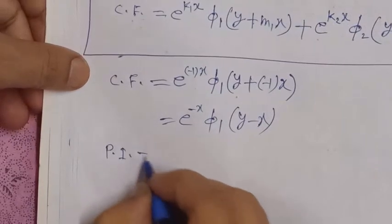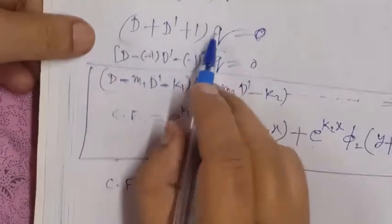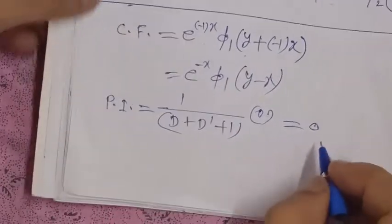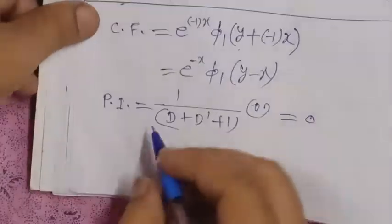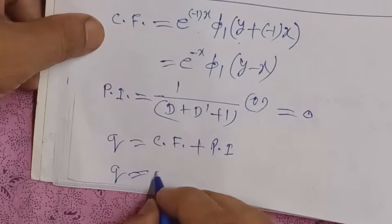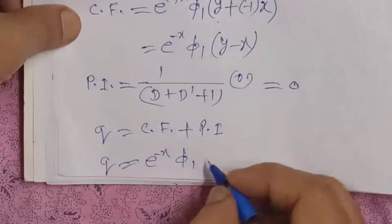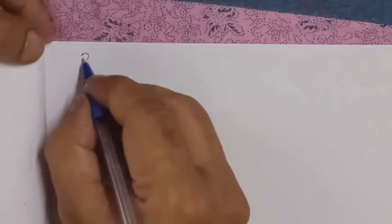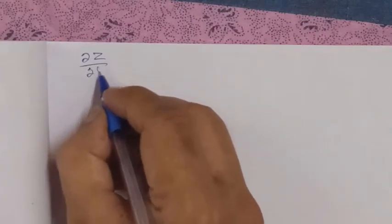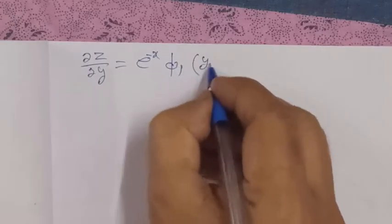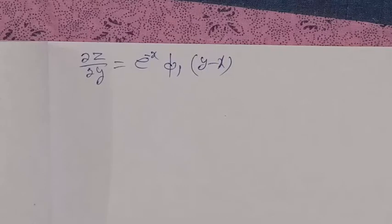The particular integral is zero, as you know. Adding the complementary function and particular integral together, we can directly write: z equals e to the power minus x times phi1 of y minus x. Since del z over del y equals q, we need to find z, which is the dependent variable.